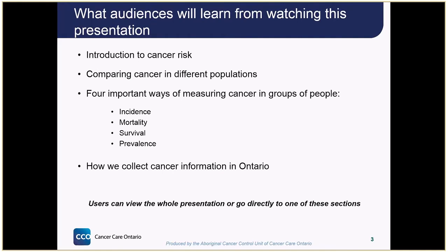This presentation will include an introduction to cancer risk, an explanation of how we compare cancer in different populations, four important ways of measuring cancer in groups of people, and some of the methods we use to collect cancer information in Ontario. Viewers can watch the whole presentation in one sitting, or go directly to any of these individual topics.